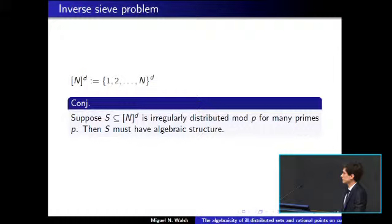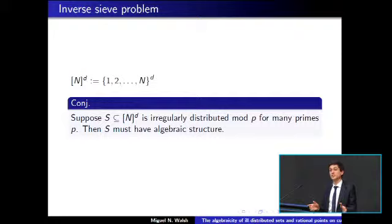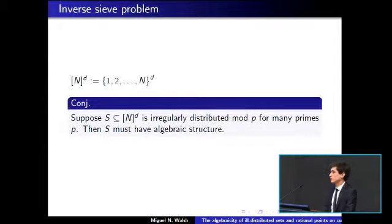Maybe the only way a set could be very badly distributed in residual classes for many primes p is for the set to have some specific form, some specific kind of structure. This is the general conjecture or philosophy I want to discuss: that in many situations, if a set is indeed very badly distributed in residual classes, this is because the set has algebraic structure. In practice, when you're in a situation where you want to know how your set is distributed in residual classes, you can either assume that your set behaves as well as you want, or it has to have a very specific structure, in which case you can use specific tools.